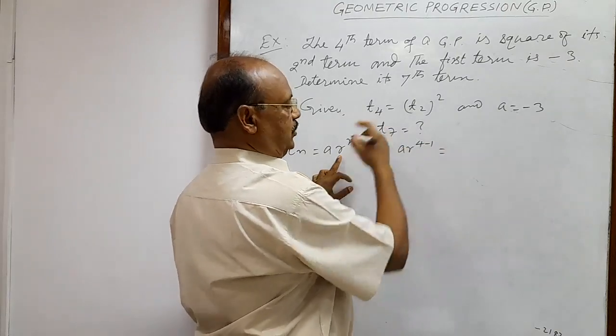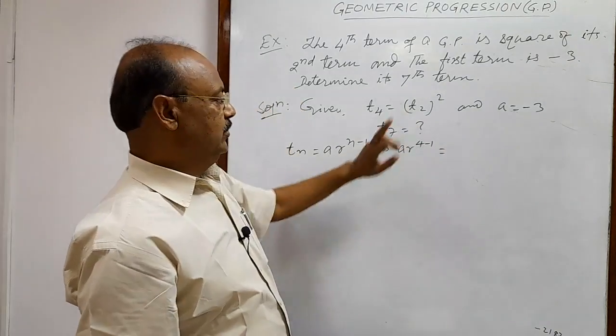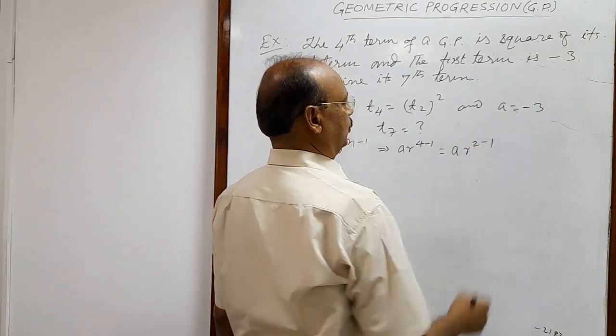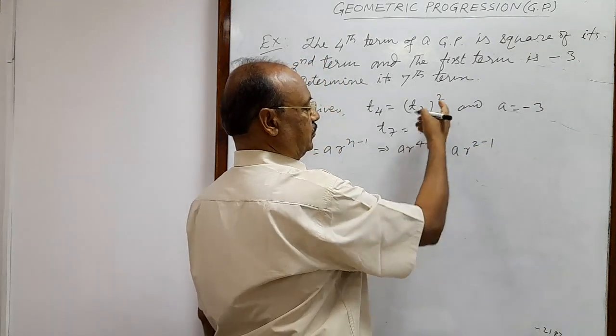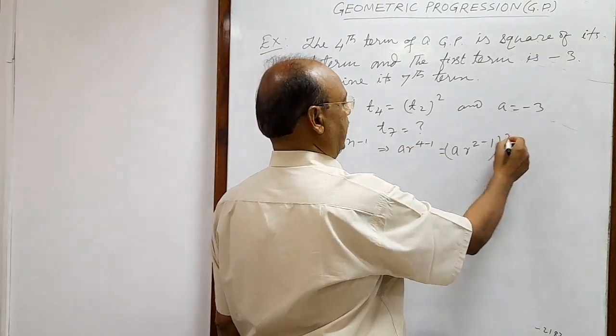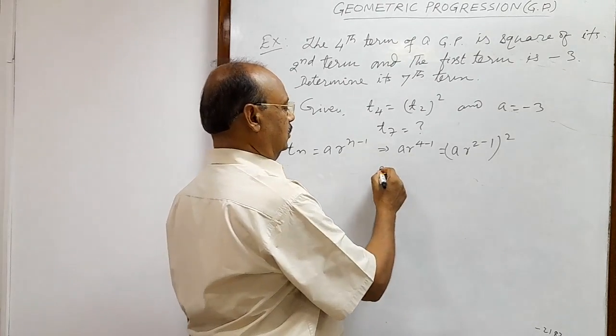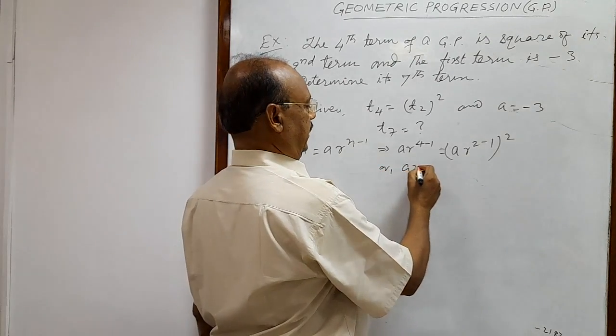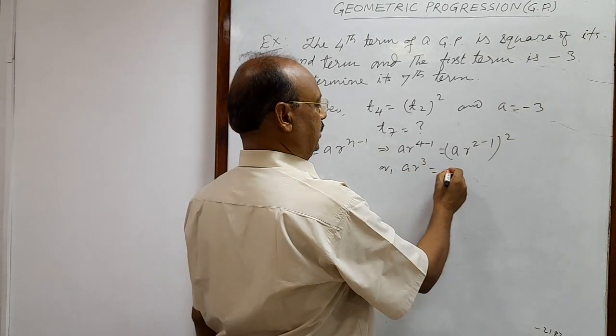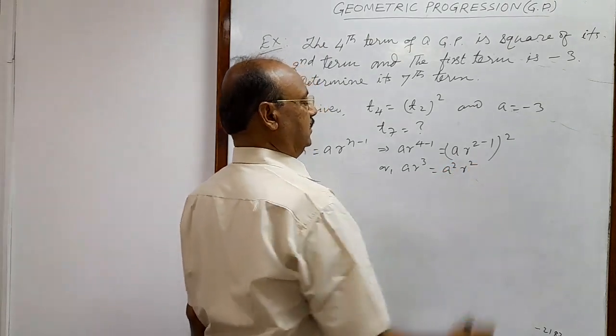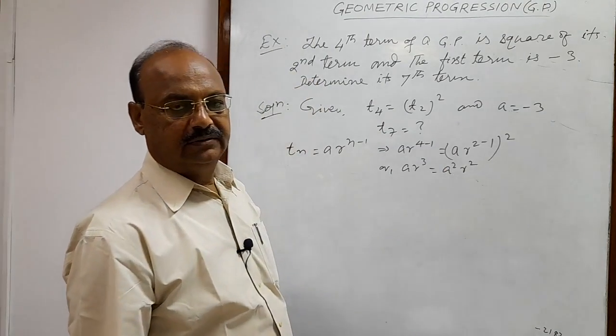This is T4 and T2 is equal to how much? T2 is equal to A R to the power 2 minus 1. And this is square of T2. So we can write A R cube is equal to A square R square.